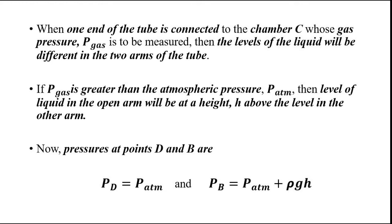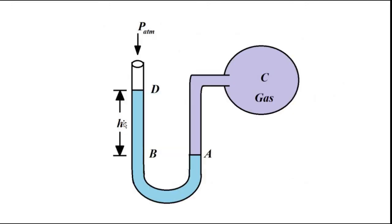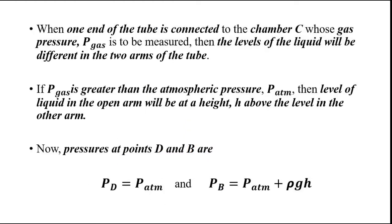Here ρ is the density of mercury, g is acceleration due to gravity, and h is the height of the mercury above the reference level AB. The line joining A and B — above that is h. So pressure at point B is the sum of atmospheric pressure plus the pressure exerted by this mercury column at height h in the left limb.